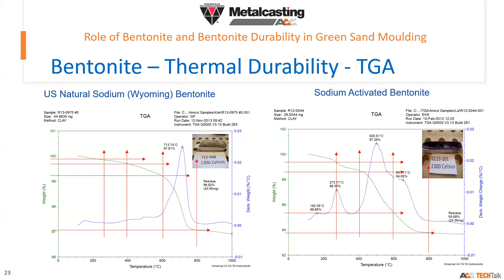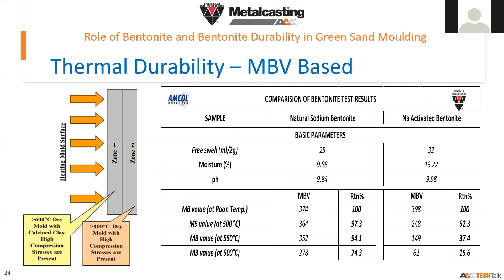This indicates that the workable range for natural sodium bentonite is much higher. However, this is a comparative study and does not validate actual production parameters. For that, the next step is the MBV-based method. We check the MBV of a given sample at room temperature and then calcinate the bentonite in a muffle furnace under controlled conditions at 500°C, 550°C, and 600°C.